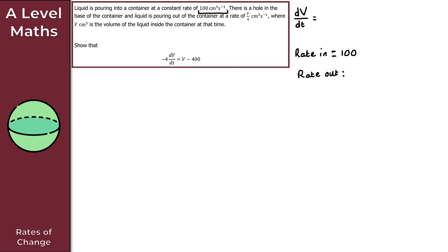For the rate out, using the information given, liquid is pouring out at a rate of V/4 cm³ per second. Because this is leaving the container, we give the rate out as negative: −V/4. So dV/dt = rate in + rate out = 100 − V/4.